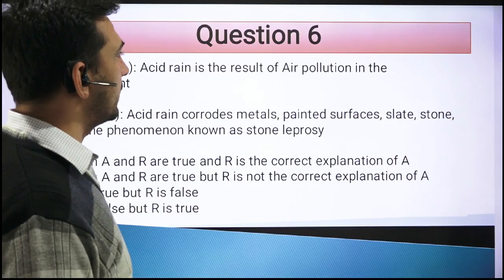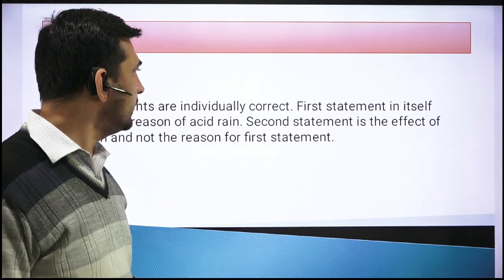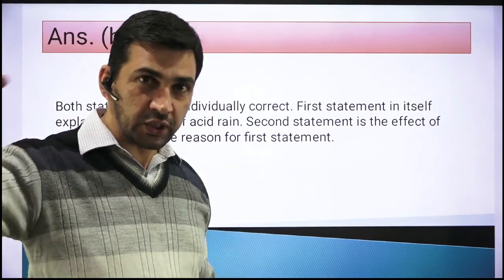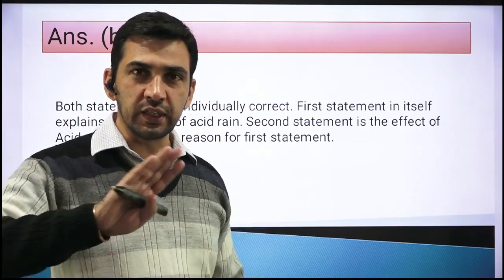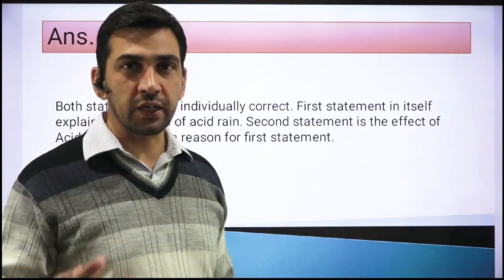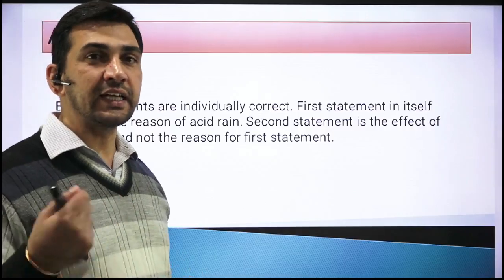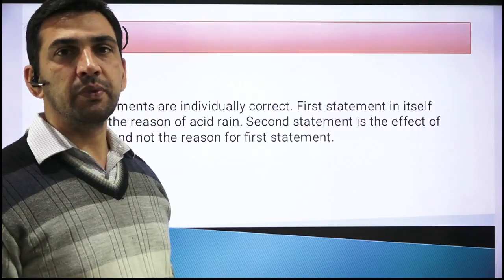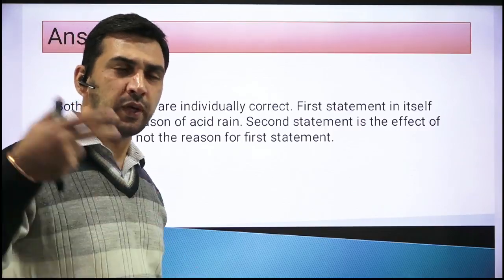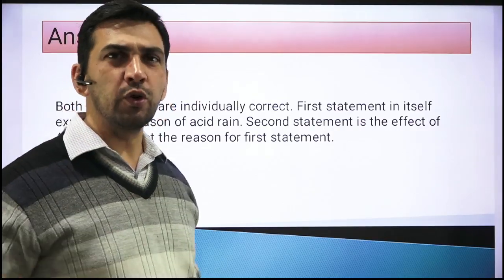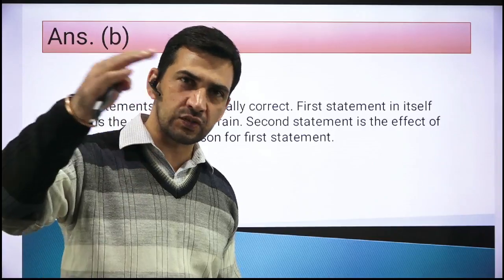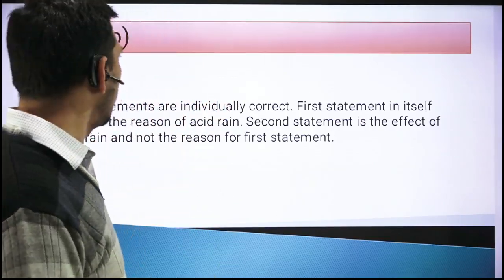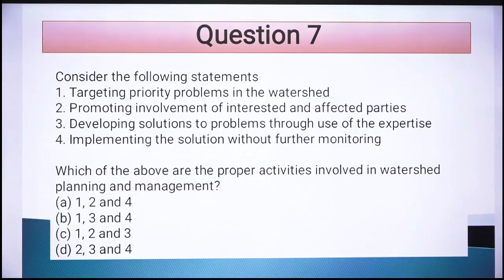For example, the Taj Mahal has been getting eroded because of acid rain from pollution in the surrounding area — this has led to directions that industries around that area should be relocated. So this is how the acid rain concept relates to practical examples. Now let's go to the next question.